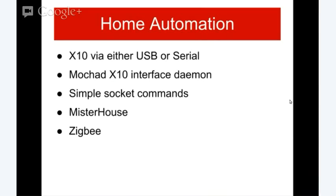For home automation, personally I use X10 via USB. Sure, some people say that X10 is outdated tech, but they're easily available, they're cheap, and they work. The tech around it has been sufficiently developed that we can all figure out how it works from well-documented code and wikis. I happen to use Mochad, and I literally just tell it to my box and say turn on my living room light, and it's on. That's simple software.